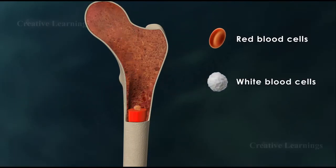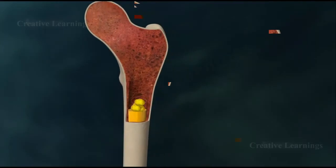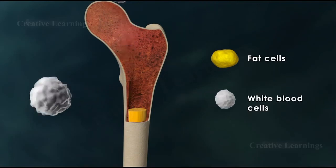Yellow marrow consists largely of fat cells and produces some white blood cells.